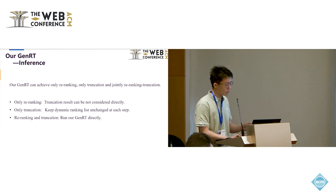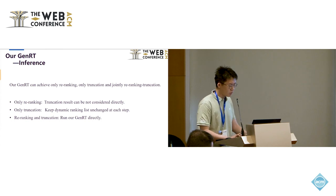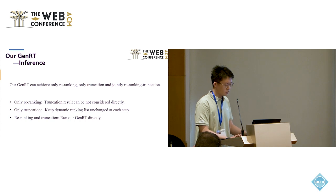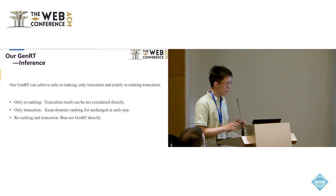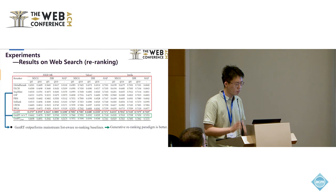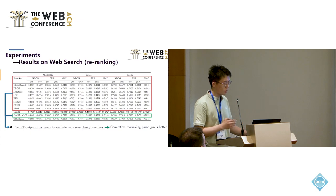We will introduce our inference of JRT. Our JRT can achieve not only the re-ranking and only truncation and the jointly re-ranking truncation pipeline. If we want only re-ranking, the truncation result at each step cannot be considered directly. If we only want truncation, we can keep the dynamic ranking list unchanged at each step. If we want to perform the re-ranking truncation pipeline, we can run our JRT directly.